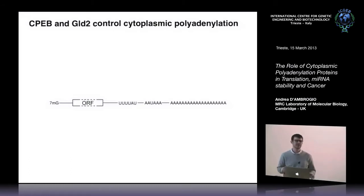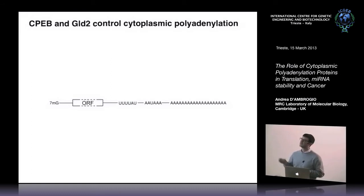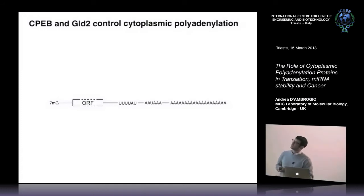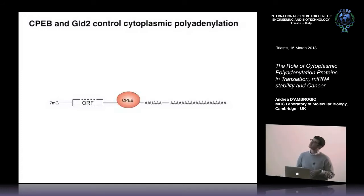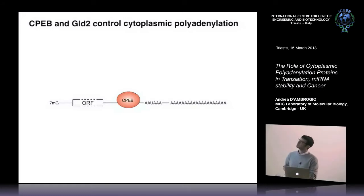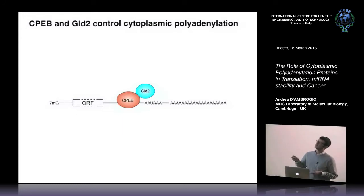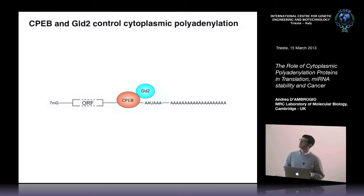Some mRNAs — more or less 20% of the transcriptome — have an additional sequence very close to the poly-A site called the cytoplasmic polyadenylation element. This is characterized by U's and at the very end an A and another U, and this is bound by an RNA binding protein called cytoplasmic polyadenylation element binding protein, obviously. This in turn recruits other factors, one of them being GOLD2 or PAPD4 or TATase2, discovered in worms. This is a non-canonical poly-A polymerase.